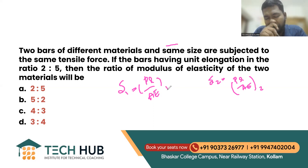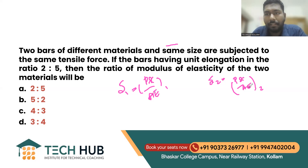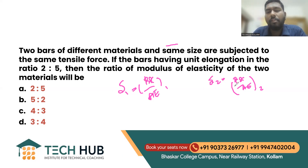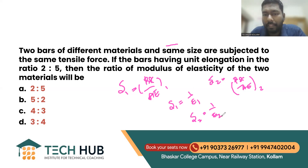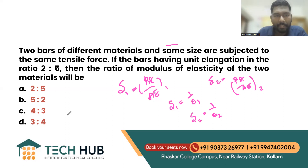The question is: if you have two bars of the same size — L and A, with L and A equal to 1 — and the tensile force applied is the same, giving P1 and P2, then delta 1 equals 1 by E1 and delta 2 equals 1 by E2. If the bar has unit elongation in the ratio 2 is to 5, that is, delta 1 divided by delta 2 equals 2 by 5, find the ratio of the modulus of the two materials.